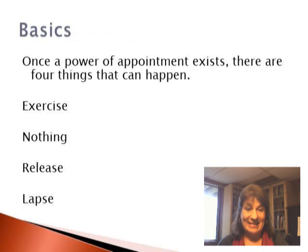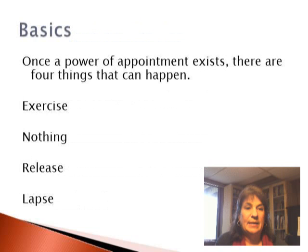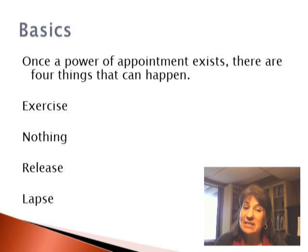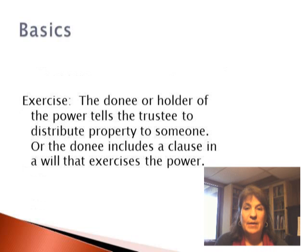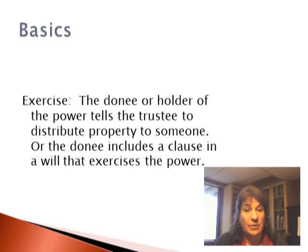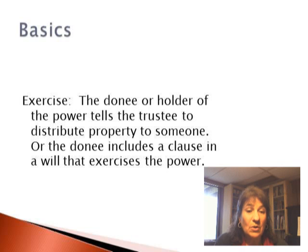Once the power of appointment exists, there are four things that can happen: exercise, nothing, release, or lapse. Exercise means the donee or holder of the power tells the trustee to distribute property to someone, or the donee includes a clause in a will that exercises the power.